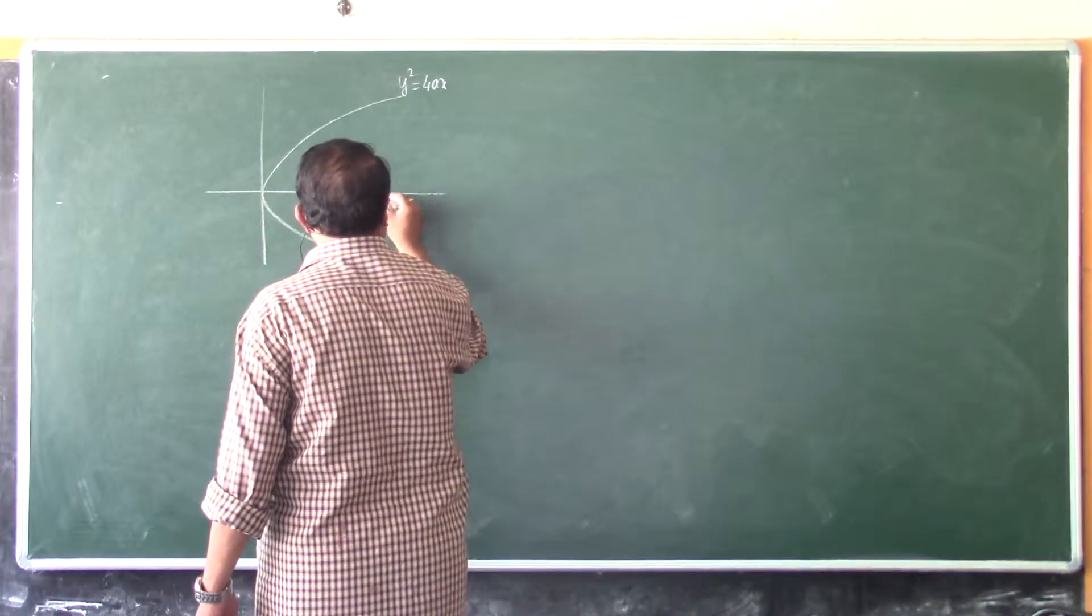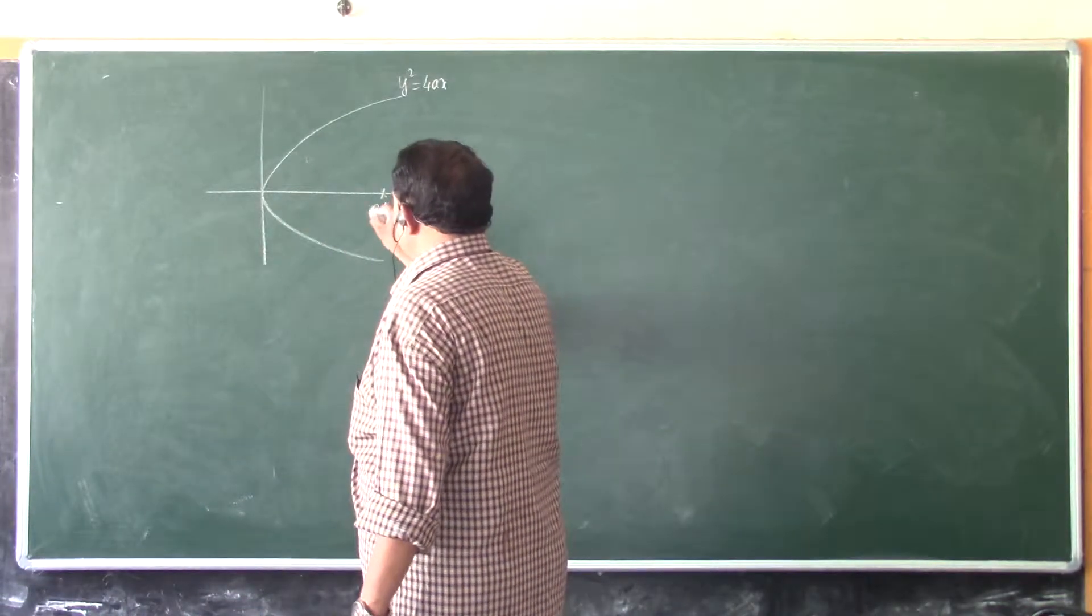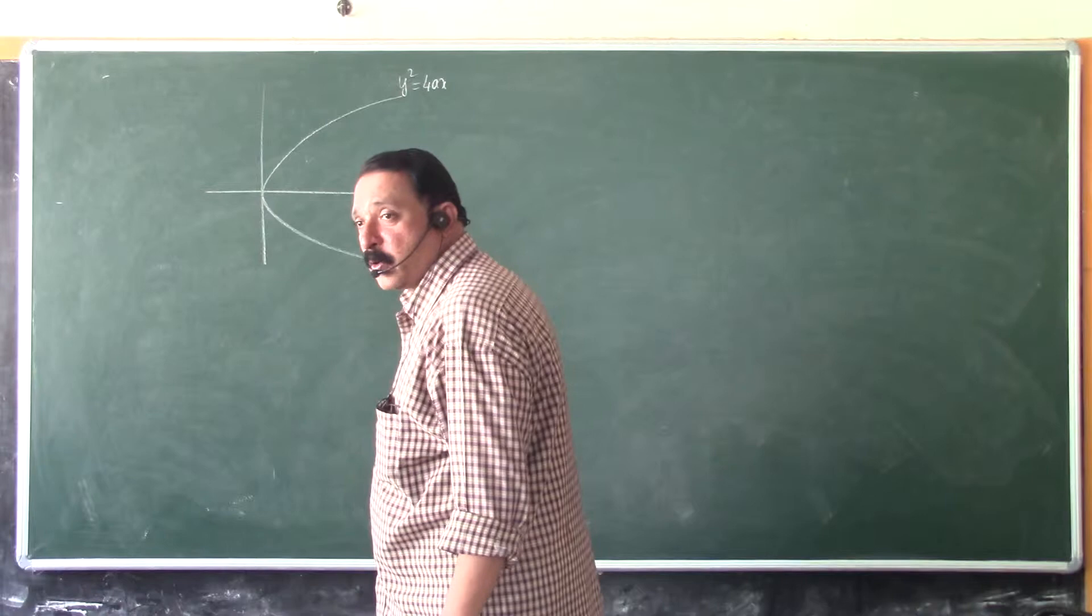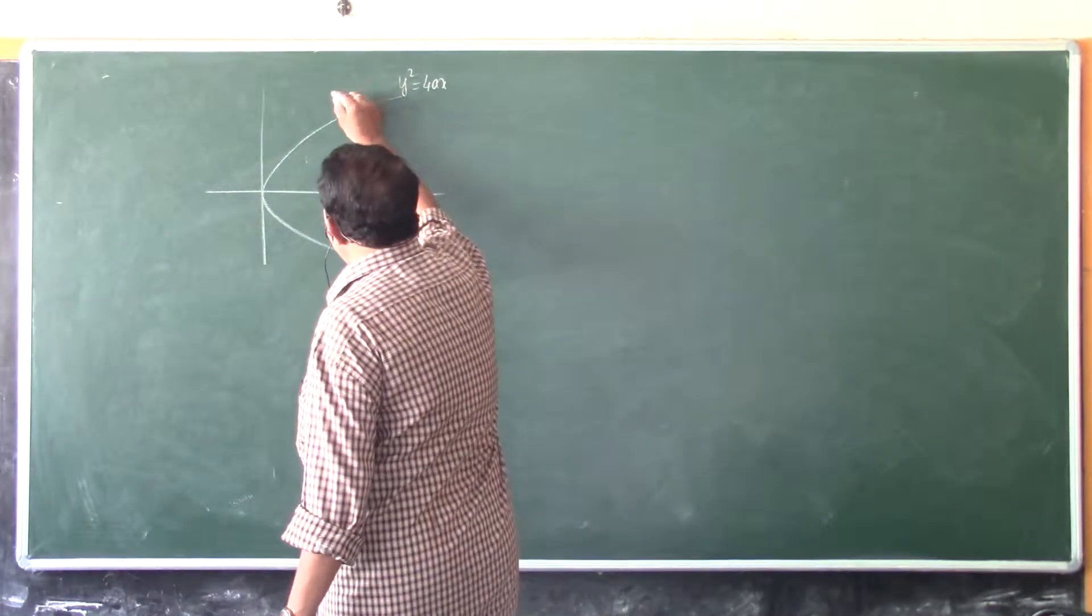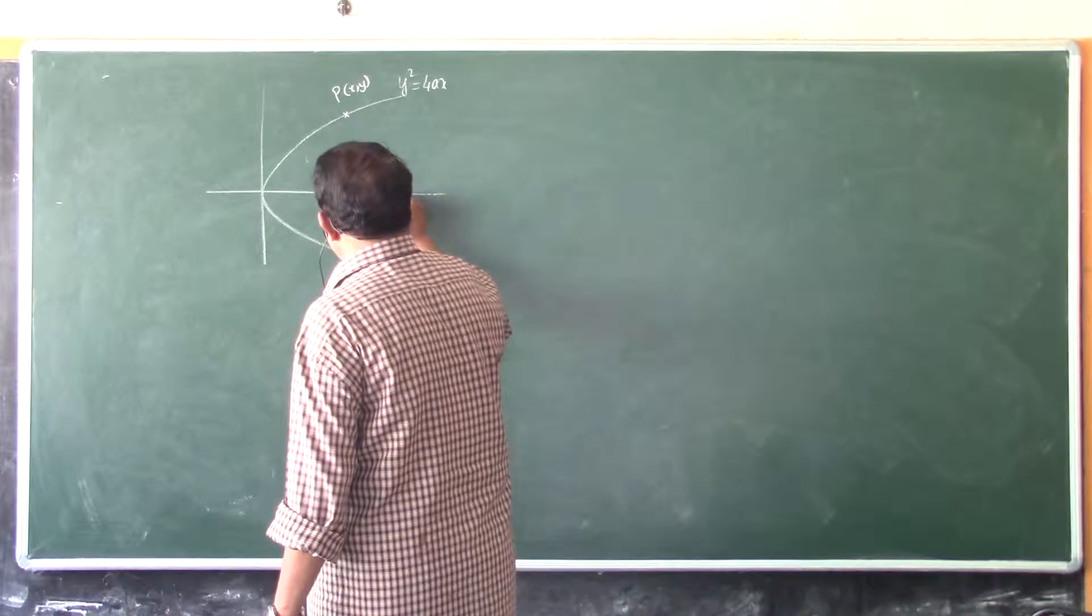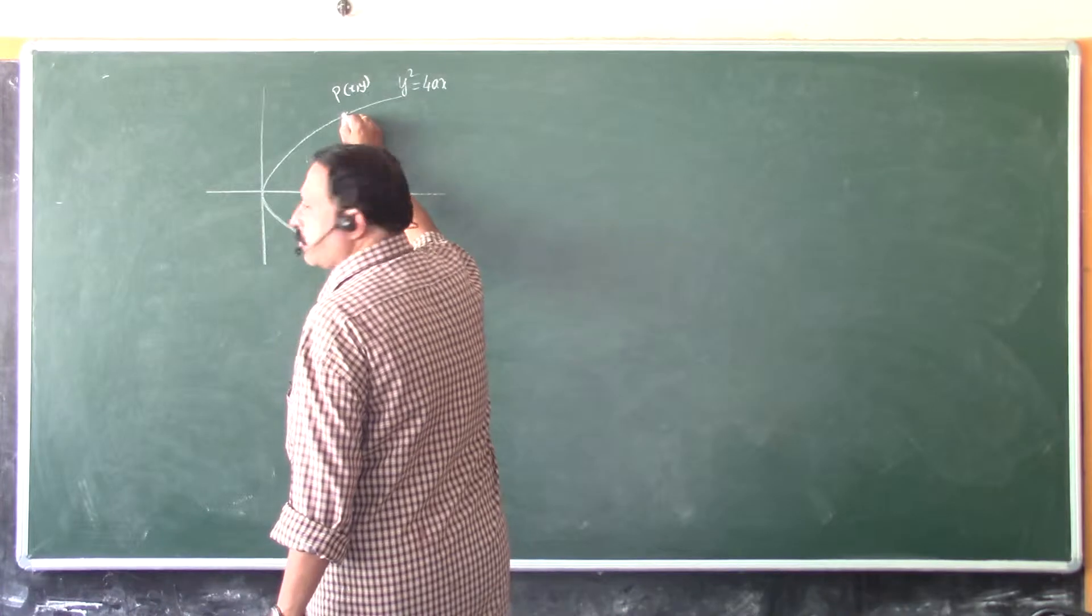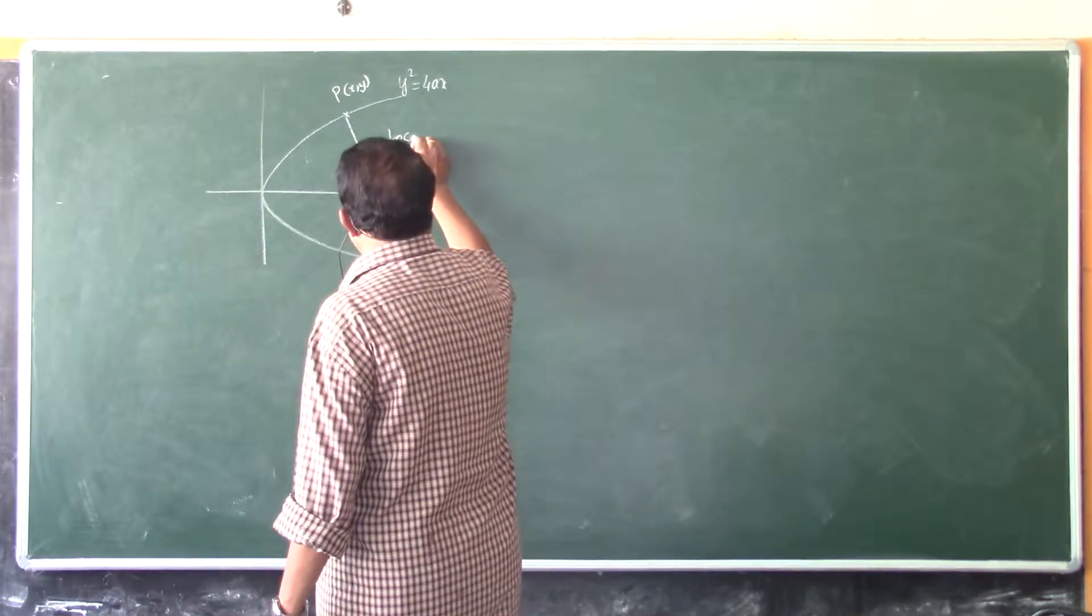And this is the focus. The coordinates of the focus, denoted by S, is (A, 0), and let P be any point on the parabola. Then the distance between S to P is called as focal distance.